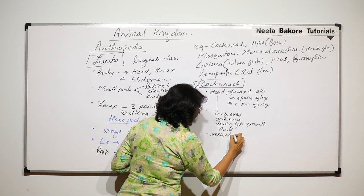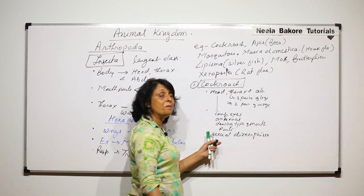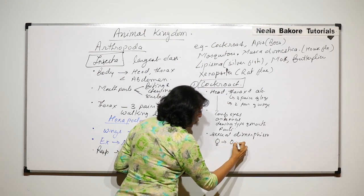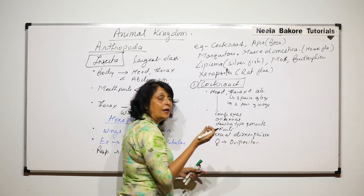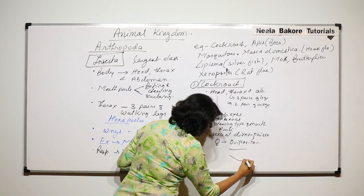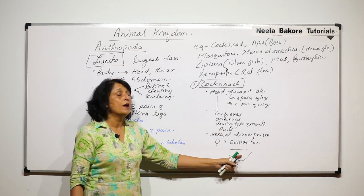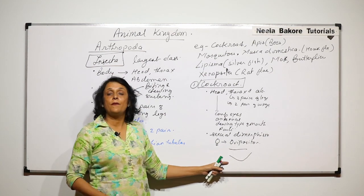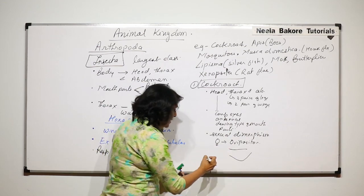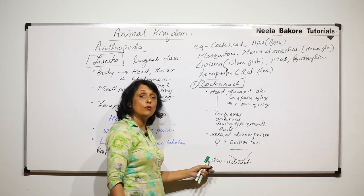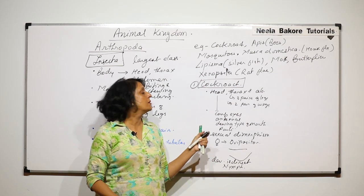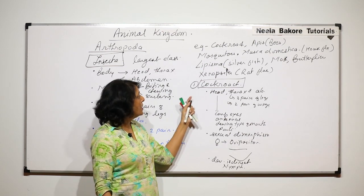For excretion cockroaches have Malpighian tubules, and for respiration there is the tracheal system. In cockroaches there is sexual dimorphism, meaning male and female cockroaches can be easily distinguished from each other. The female cockroach has an ovipositor — a slight bulging structure visible from the lateral side of the abdomen where fertilization takes place. Fertilization is internal and development is direct; what comes out of the egg is a young cockroach called a nymph.